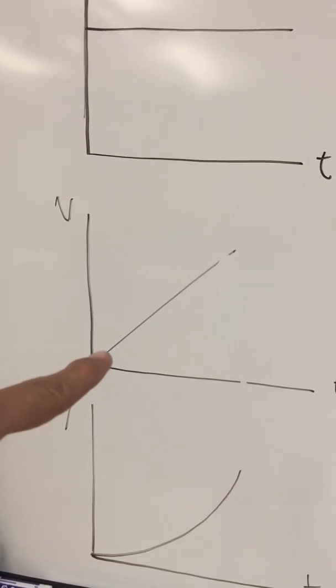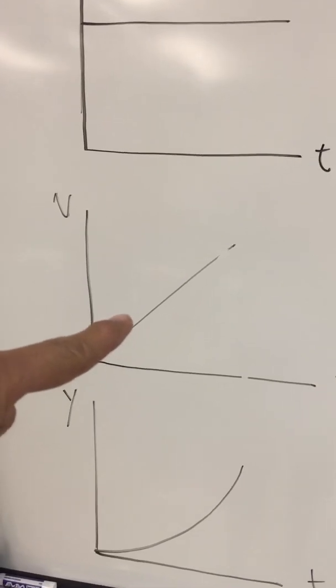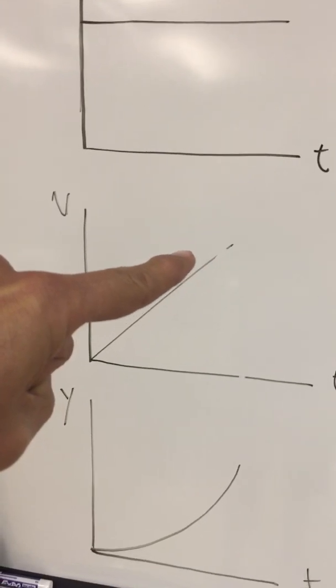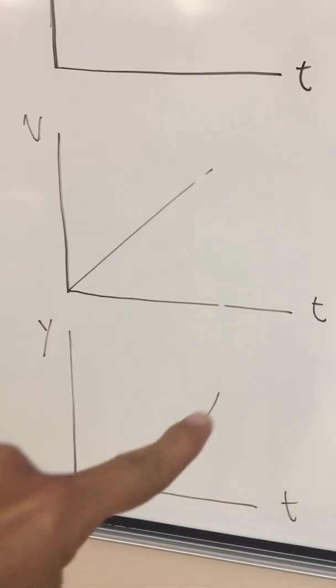The speed is increasing at 9.8 meters per second per second. The slope of this graph is a continuous value. Now position versus time we know is parabolic.